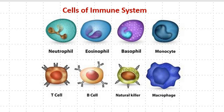Basophils are also a type of white blood cells. Although produced in the bone marrow, they are found in many tissues throughout the body. In an allergic reaction, the immune system is exposed to an allergen, and basophils release an organic compound known as histamine, which causes itching.